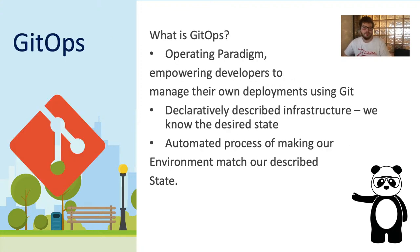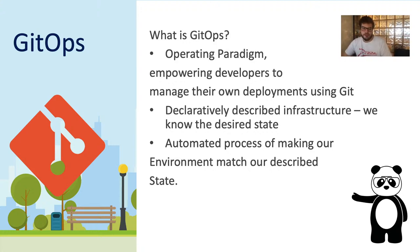So what is GitOps? It's an operating paradigm which empowers developers to manage their own deployments using Git. Traditionally, releases of applications are handled by an operations team — the development lifecycle sits with developers who develop, test, and publish their finished application, and that published application is then picked up by an operations team who manage the deployment to a production environment. GitOps takes these processes and automates them through the power of Git.